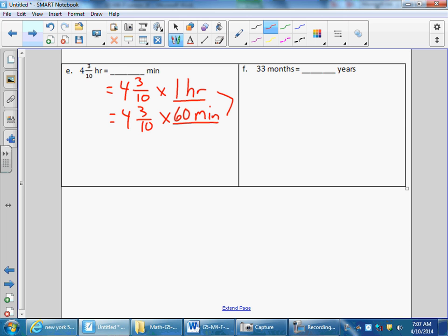Okay, then I'm going to continue. Again, you can distribute and do four times sixty and three-tenths times sixty, but I like to turn it into an improper fraction. Ten times four is forty, plus three is forty-three-tenths, times my sixty, but I look at sixty as a fraction. I can cross-simplify here because ten and sixty have a common factor of ten. Ten divided by ten is one, and sixty divided by ten is six.